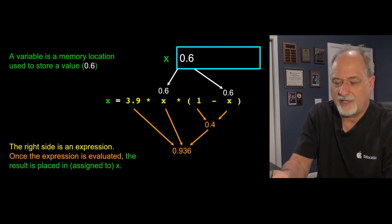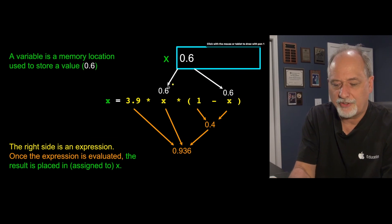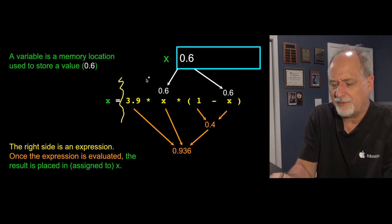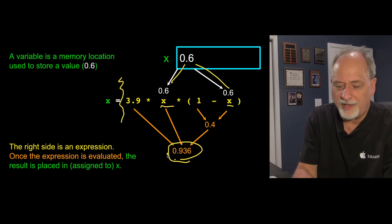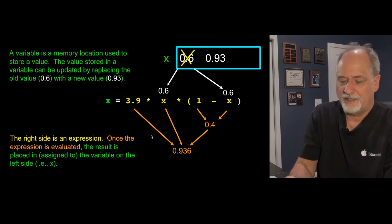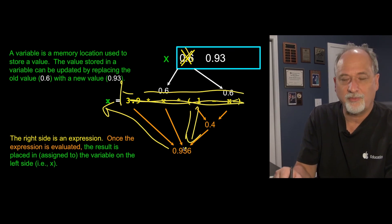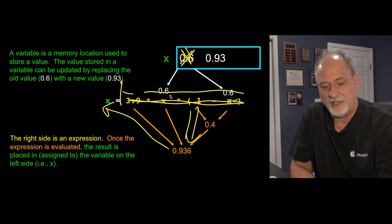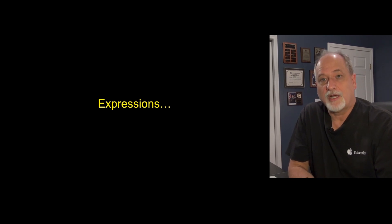For example, if x has 0.6 in it, it first ignores the left-hand side and evaluates the expression — pulling 0.6 wherever x appears, running the calculations — and only then puts the new value back into x, wiping out the old value. At that point it's been reduced down to 0.93, and that is what's stored as the new value. Up next we'll talk a little bit more about making more complex expressions.